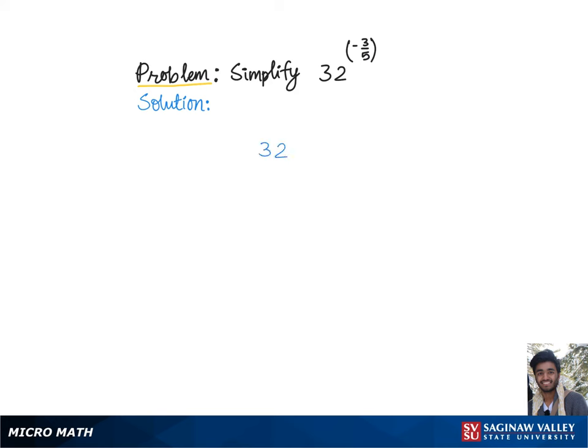To simplify 32 raised to the power of negative 3 fifths, the basic idea is to get rid of this denominator 5 from the fractional exponent so that the whole problem simplifies to a number raised to the power of the numerator negative 3 only. Now to get rid of this denominator 5, we need to break down this base 32 such that it becomes a number raised to the fifth power.